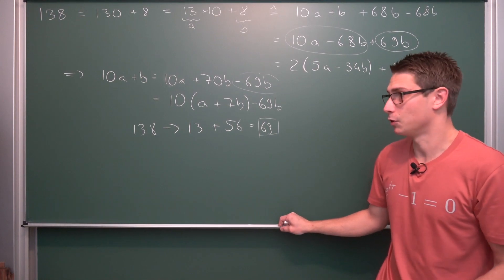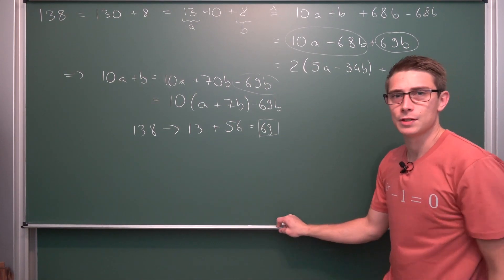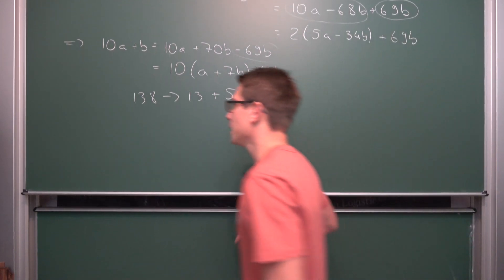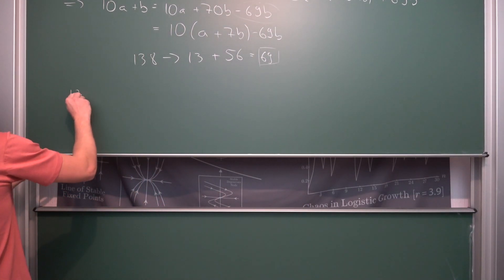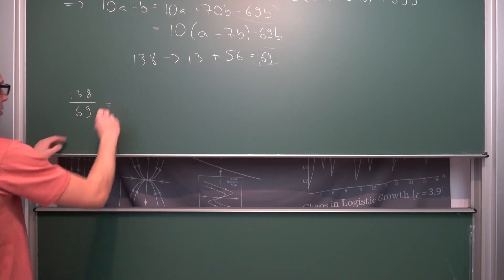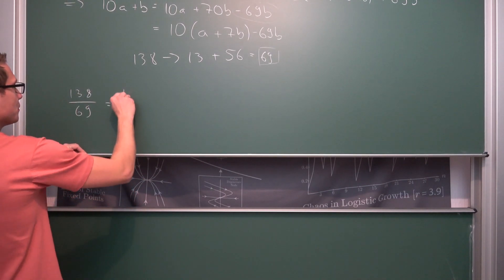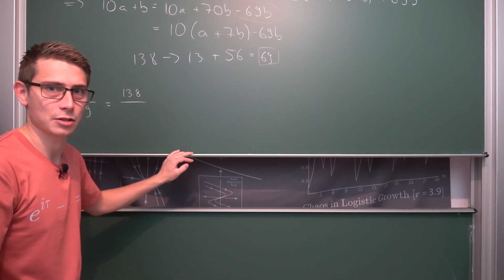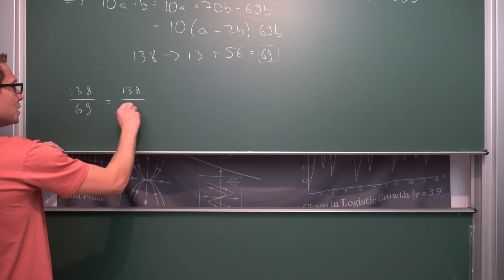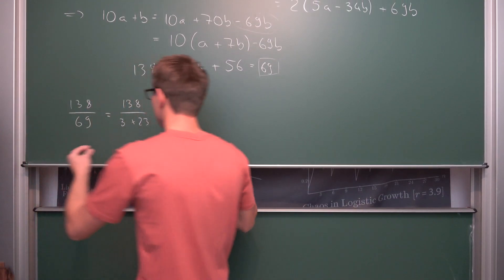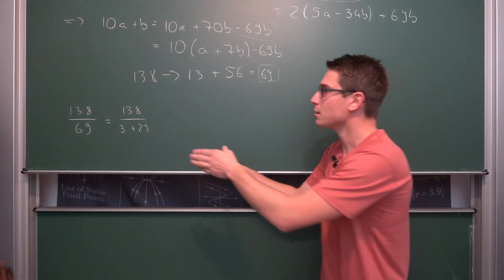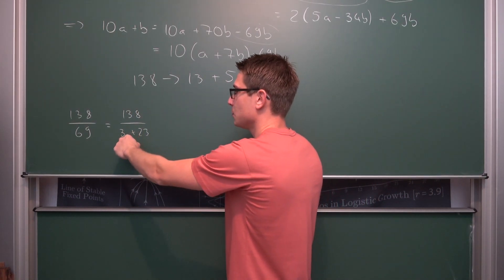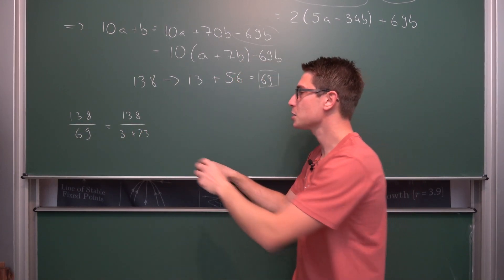But there's still a different way to get a divisibility rule for 69, and this is just making use of the fact that 69 is a composite number. If we take a look at 138 divided by 69, we can turn 69 into its prime factorization. All of us know the prime factorization of 69 immediately — it's 3 times 23. Meaning 138 is only divisible by 69 if and only if it's divisible by 3 and divisible by 23.